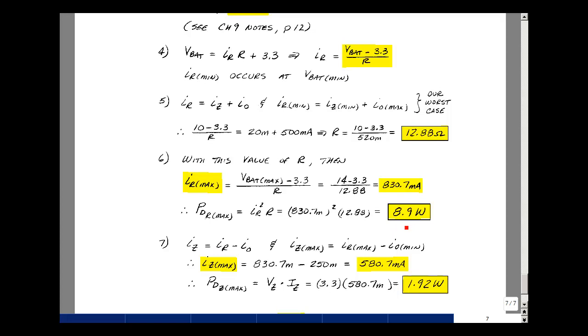Now what about the wattage rating of the Zener diode? Current in the Zener diode is equal to the current in the resistor minus whatever flows into the load. So when this is at its largest value and this is at its smallest value, we'll have the largest current in the Zener diode. I sub Z maximum would be I sub R maximum minus the minimum load. So the most current we could get in the resistor when the voltage went up to 14 volts was 830.7 milliamps. That was a calculation back over here. And then the least amount of current in the CD player was a quarter amp. That's 580.7 milliamps.